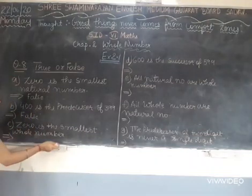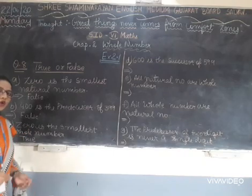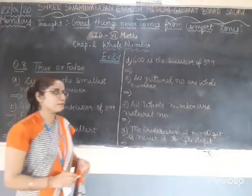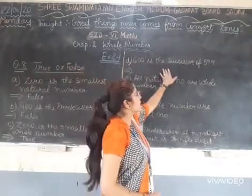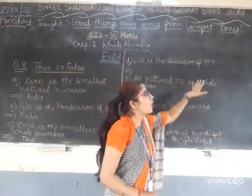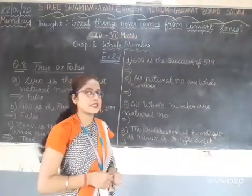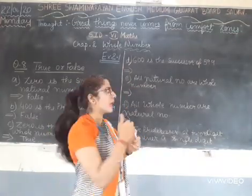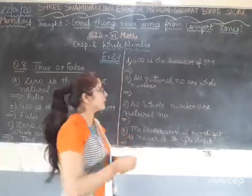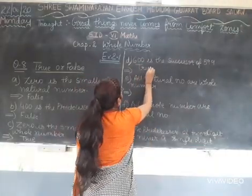0 is the smallest whole number — true, 0 is the smallest whole number. 600 is the successor of 599 — yes, successor means the number after. 599 ke baad 600 hai. So the statement is true.